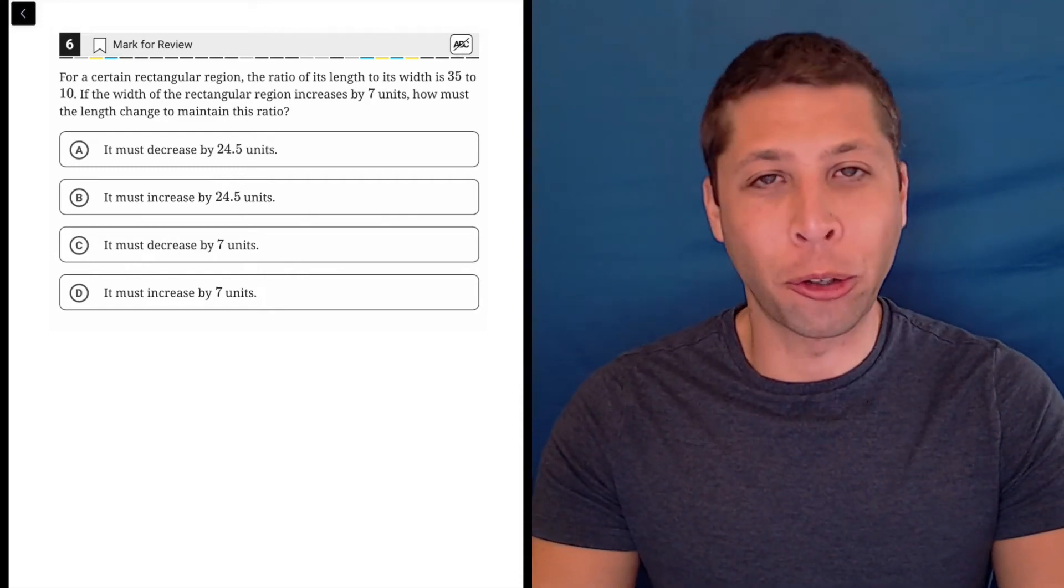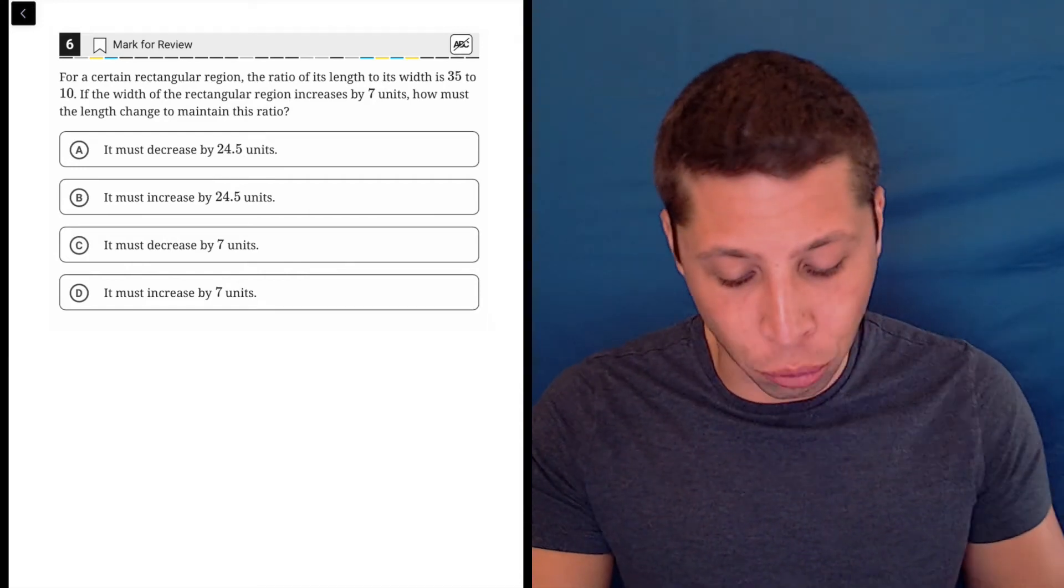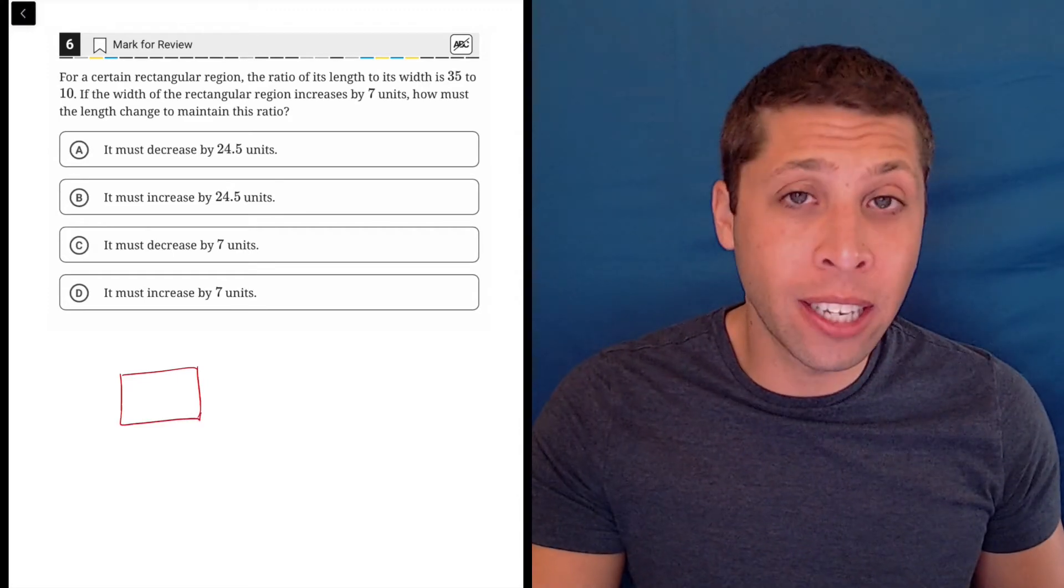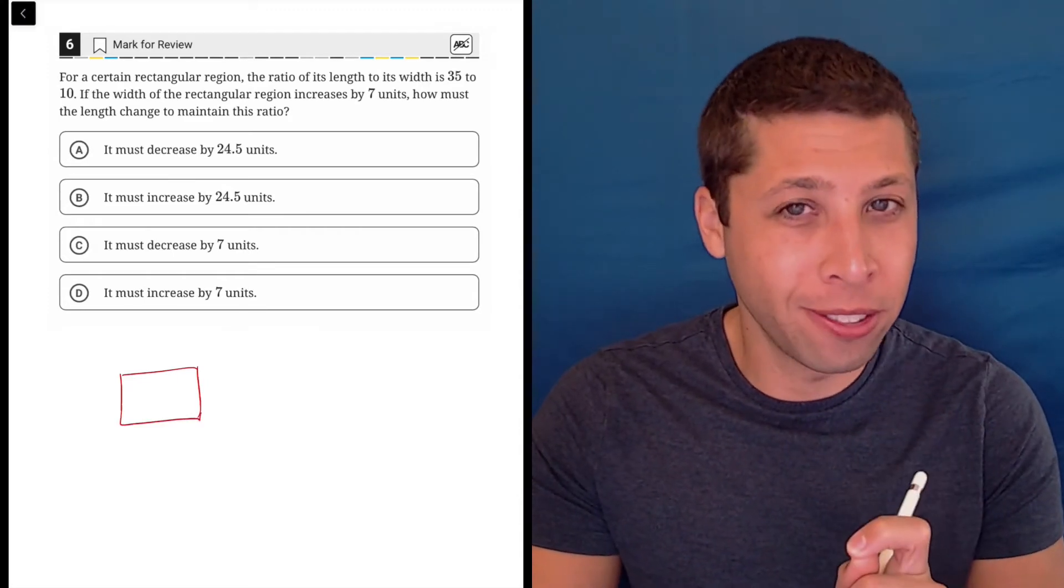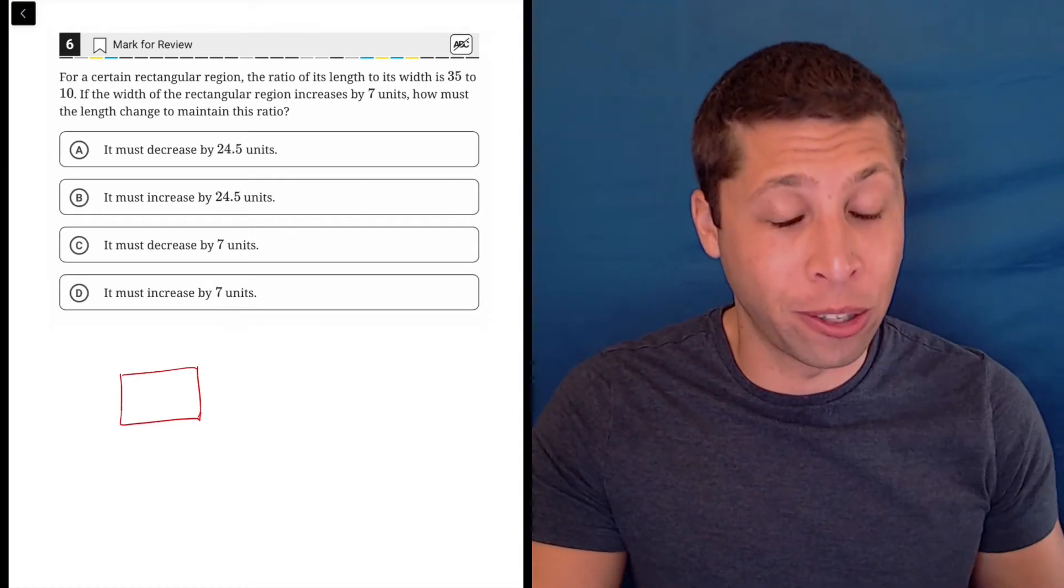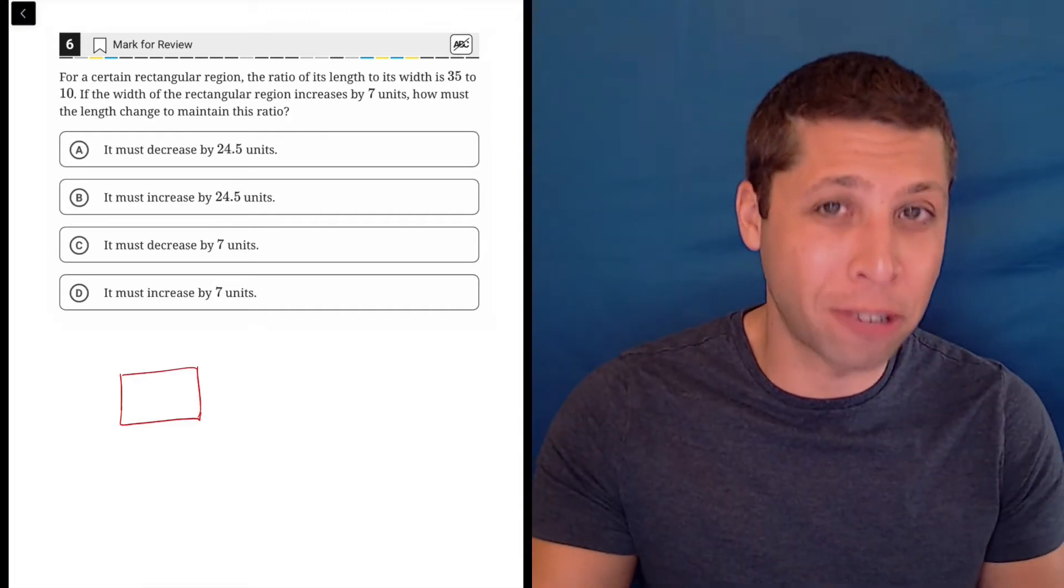Anytime we have a geometry question without a picture, we should probably draw one. They're telling us we have a rectangle here, and they aren't exactly telling us the dimensions. They're telling us that the length and width are in a ratio of 35 to 10, which is a ratio, not the actual measurements.